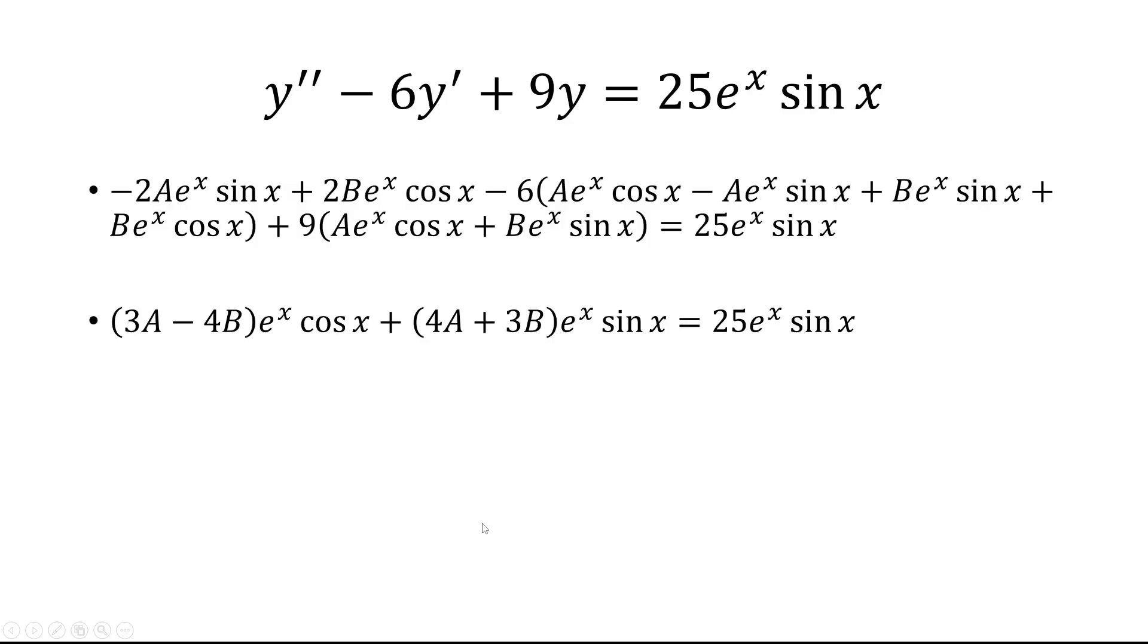A bunch of things cancel, and what we have left is 3a minus 4b multiplied by e to the x cosine x plus 4a plus 3b times e to the x sine x, and that's equal to 25 e to the x sine x.